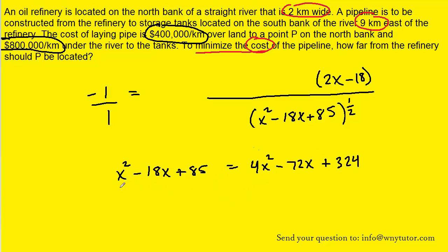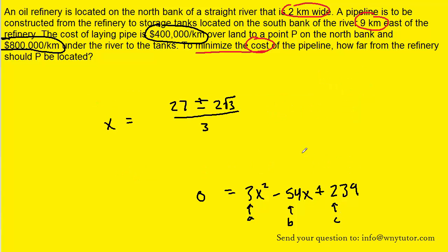Let's gather all terms to the right side of the equation. So subtract x squared, add 18x, subtract 85. To solve this, we can use the quadratic formula, remembering that a is 3, b is negative 54, and c is positive 239. Here are the solutions. If you have any questions about where those are coming from, please let me know in the comments.